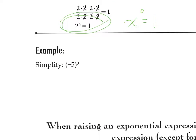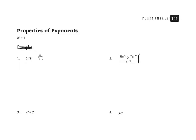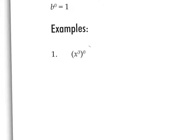We have another example down here. We have negative 5 to the zero power. Any number to the zero power equals 1, so this equals 1. On this page we have a whole bunch of examples using zero exponents. Let's zoom in on example 1. We can practice our other exponent rules here, because when the exponents are stacked up like this, we multiply them. So this would be x to the 3 times 0, which is x to the 0. Any number to the zero power equals 1.